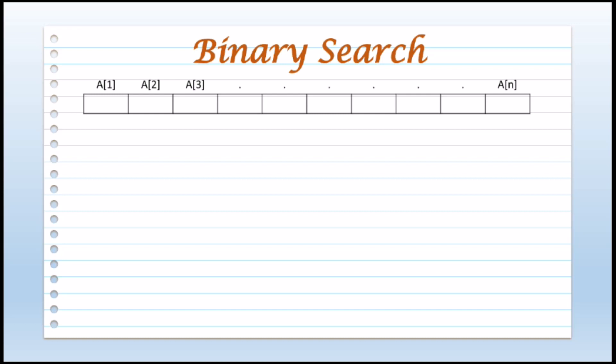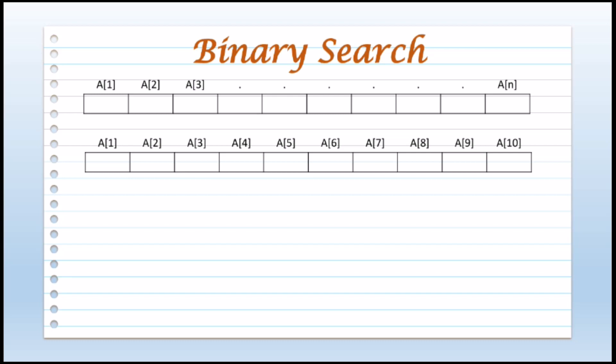Suppose n is 10, then there will be 10 elements starting from 1 to 10. So the first element will be at position 1, that is a[1]; second will be at position 2, that is a[2]; and the last element will be at position 10, that is a[10]. All the elements in the list will be in increasing order.